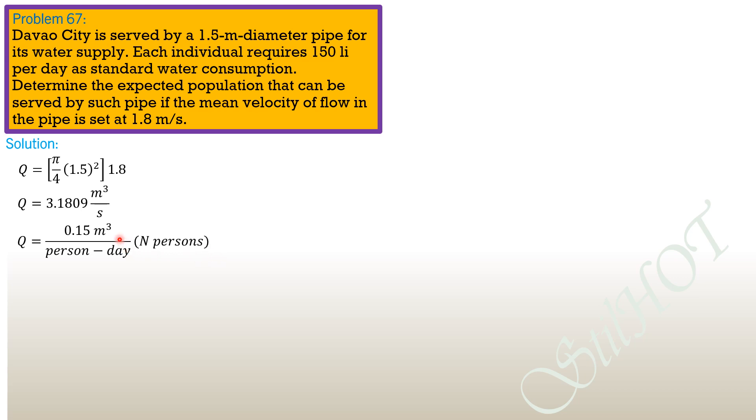This is now cubic meters per day, so we convert: times 1 day equals 24 hours, and multiply further by 1 hour equals 3600 seconds, and equate it to 3.1809. Solving for N to four significant figures: N equals 1,832,000 individuals or people.